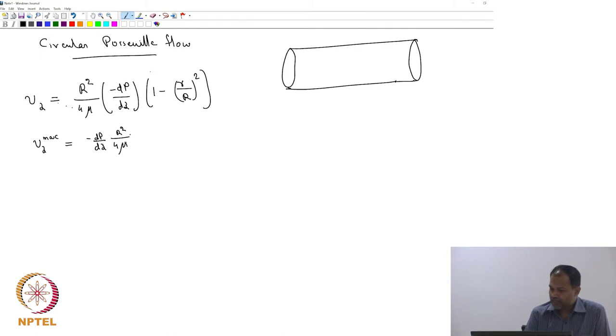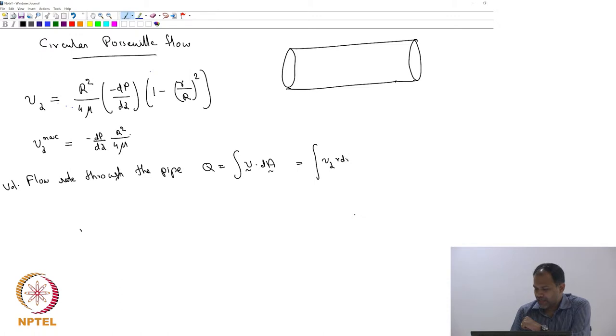The next thing we want to calculate is the flow rate through the pipe. The volumetric flow rate Q equals integral of v·dA. Can you go ahead and do that? It is indeed v_z r dr dθ with r going from 0 to capital R and θ going from 0 to 2π. Can you tell me what you get?